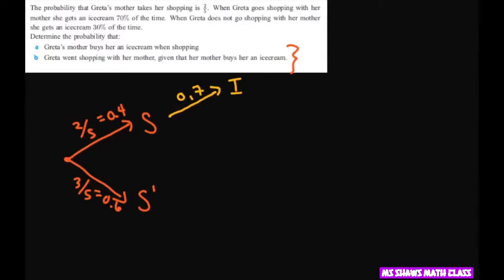That would mean not ice cream 30 percent of the time. And when she doesn't go shopping she gets ice cream 30 percent of the time, and therefore not ice cream would be 70 percent of the time.